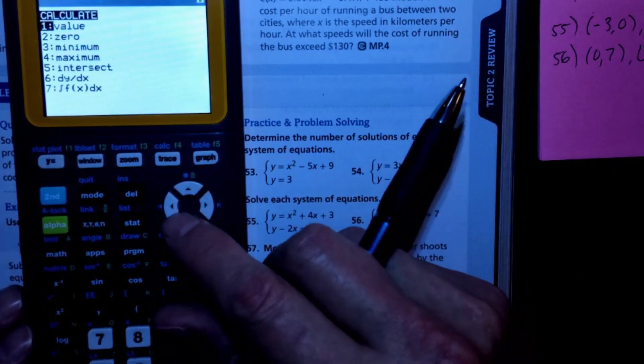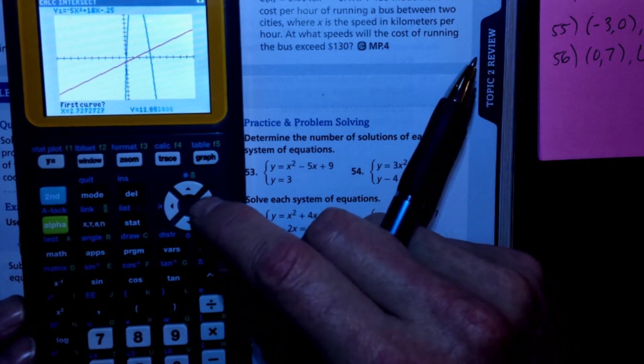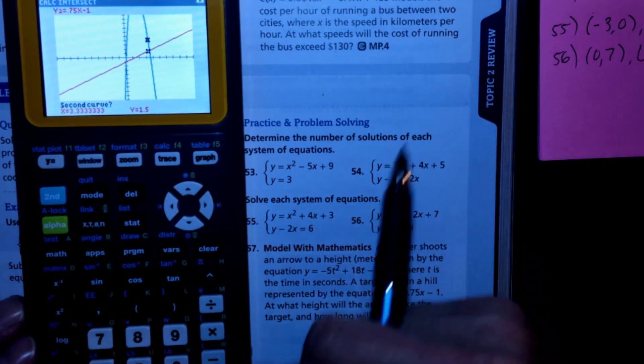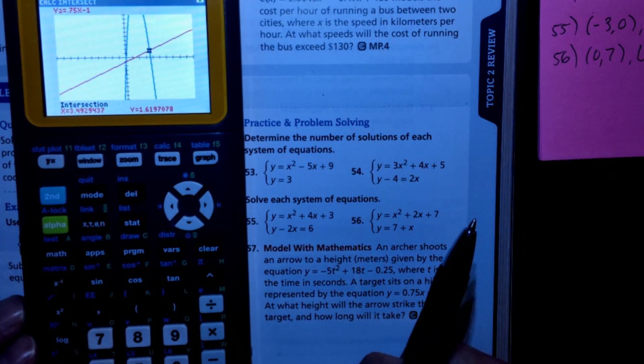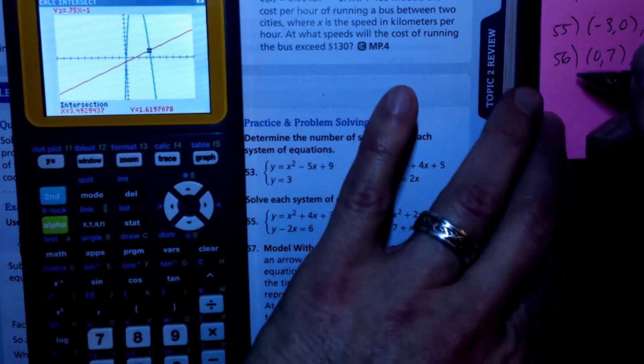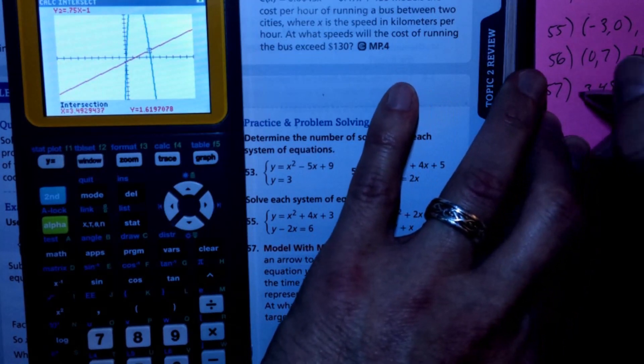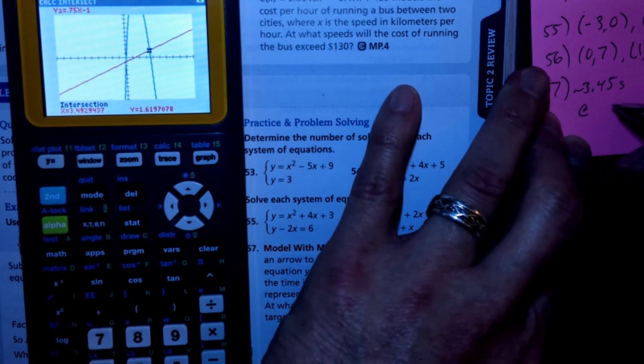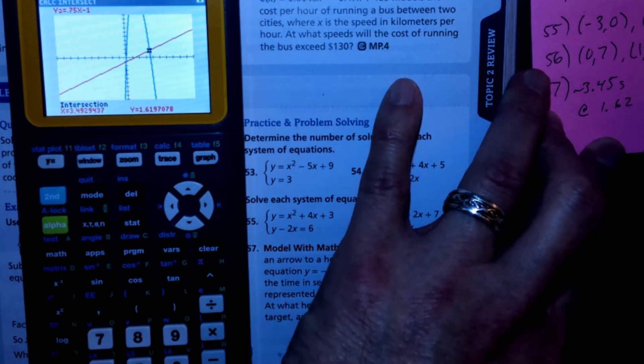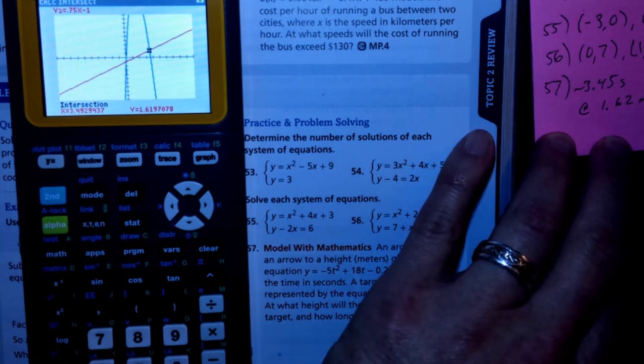Now I'm going to do a second calc with that. So second calc, intersect, and I'm going to move over here. Okay, my first curve is going to be the quadratic, and then my second curve is the line. Okay, right there it looks like after 3.49 seconds, it hits the target that is 1.62 meters off the ground, or just high.